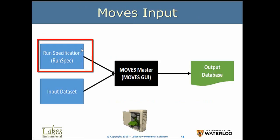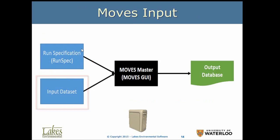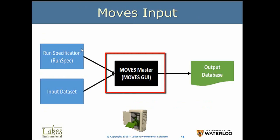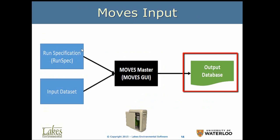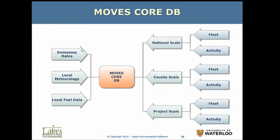Here is how it works: we have the run spec — the input file for MOVES — along with the input dataset. You go through the MOVES GUI, which is developed in Java, and you process that, and it will generate the output. You then post-process the output for many uses. There are also emission rate databases for each vehicle category and local meteorological data. For example, a jurisdiction with a lot of sunshine and warm weather, like Texas, will have more evaporative losses than a location in Canada.